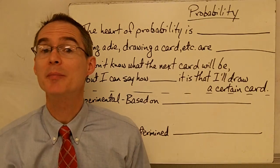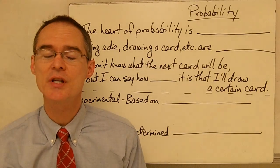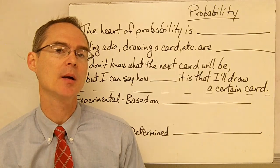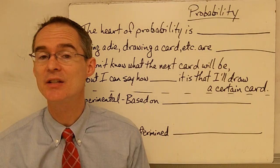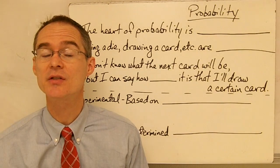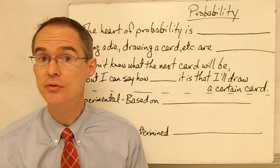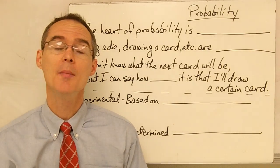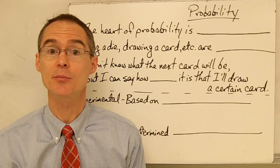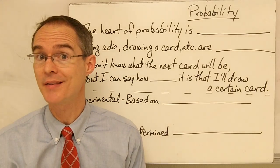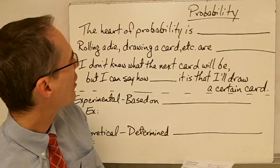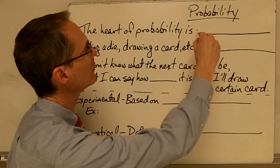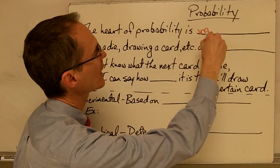This video is on probability, which is a field that was invented a few hundred years ago by a couple of mathematicians who were interested in determining the fairness of games. It's still used today by casinos around the world to make sure that their customers lose more money than they win. And the heart of probability is this idea of randomness.